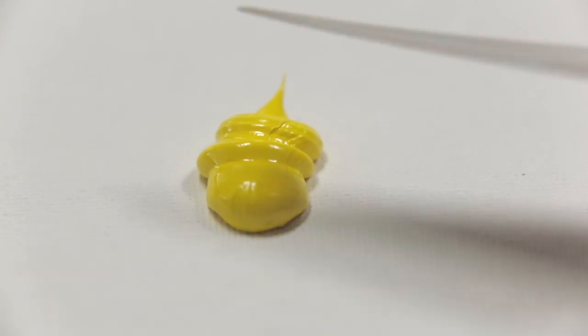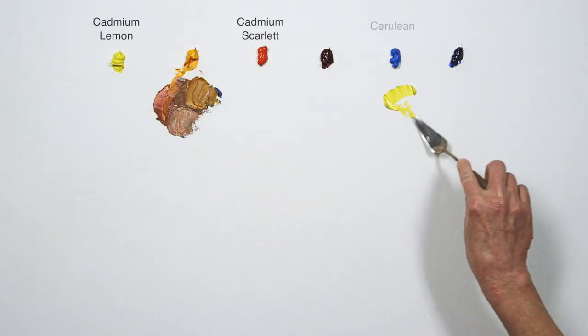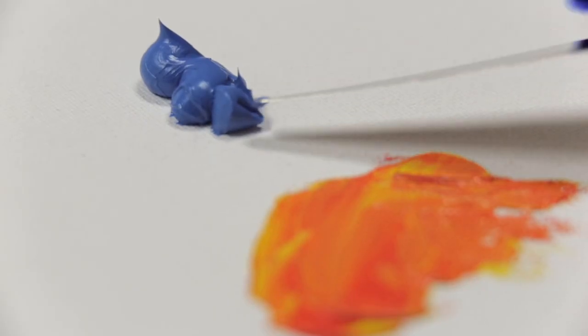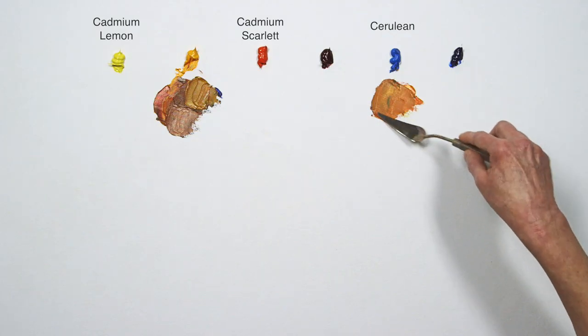So if I need a lighter value brown, I'd start with my lighter colors: Cadmium Lemon, Cadmium Scarlet, and Cerulean. The resulting brown is lighter than my first mixture and maintains its warmth because I haven't cooled it off with Titanium White.